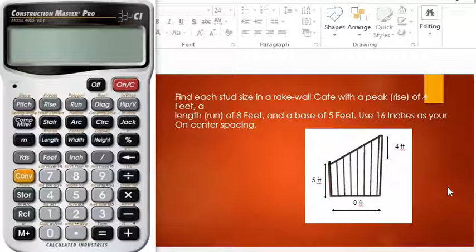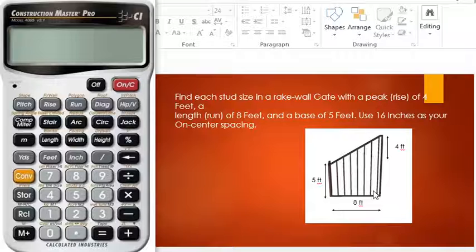Hello everyone, today we are given a situation in which we have to find the length of these on-center studs. They are given with a rake wall gate, the peak rise of 4 feet, base of 5 feet, and a run of 8 feet. What we're going to do is start by using our Construction Master Pro.